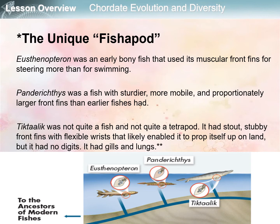The Tiktaalik had no digits — those are toes, fingers, or phalanges — but it had both gills and lungs. The Tiktaalik fossil shows both fish and tetrapod features, and its discoverers informally refer to it as a 'fishapod' — part fish, part tetrapod.